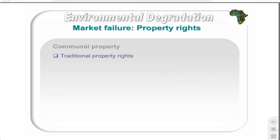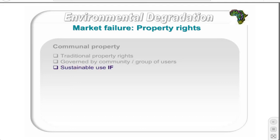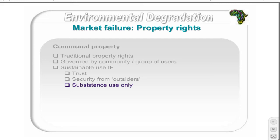Communal property is associated with traditional property rights where a community or group of users manages or governs the rights to use a resource, usually owned by the state. Sustainable use depends on the level of trust within the community, security from outsiders intruding, and users only consuming the resource for subsistence. A sudden switch by some members to pursue economic gains could quickly deteriorate into an open access scenario, and high population growth would lead to greater demand and overuse.